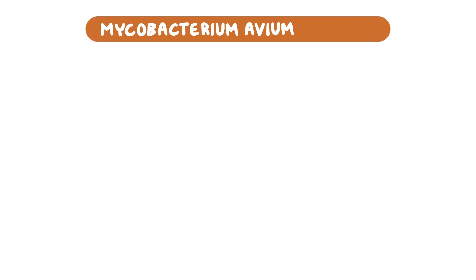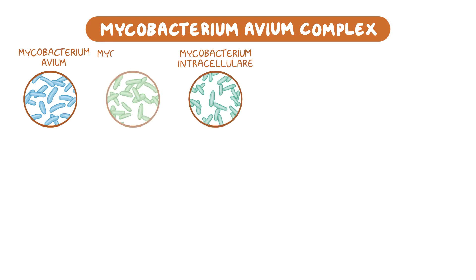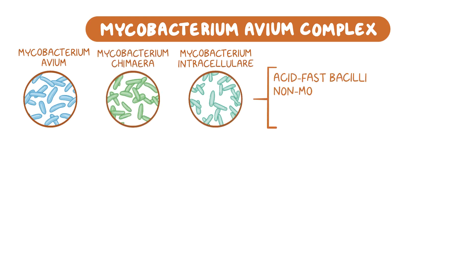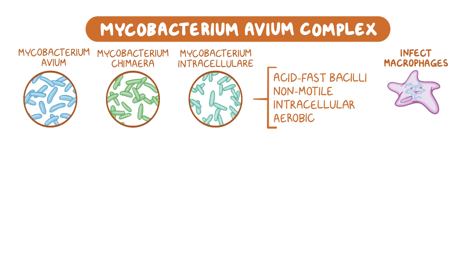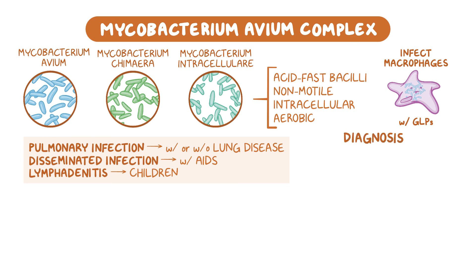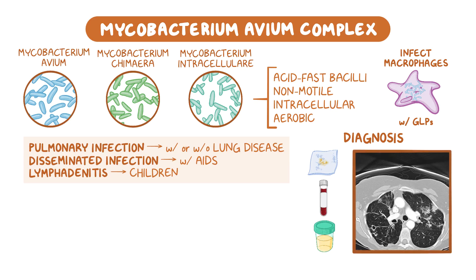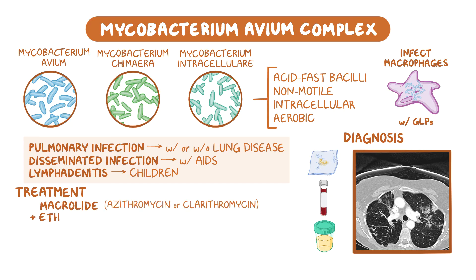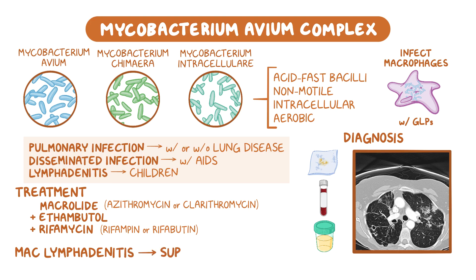As a quick recap: the Mycobacterium avium complex includes M. avium, M. intracellulare, and M. chimera. They're acid-fast bacilli, non-motile, facultative intracellular aerobic bacteria. They infect lung macrophages and survive inside of them with the help of glycopeptolipids, or GLPs, causing three types of infections: pulmonary infection in people with or without underlying lung diseases, disseminated infection in people with AIDS, and lymphadenitis in children. Diagnosis is established by identifying the mycobacterium in sputum, blood, or urine samples, as well as through compatible imaging studies such as a chest CT scan to assess for pulmonary involvement. Treatment regimens typically include a combination of a macrolide such as azithromycin or clarithromycin, plus ethambutol and rifampin for pulmonary and disseminated infections. In MAC lymphadenitis, the affected lymph nodes are surgically excised.